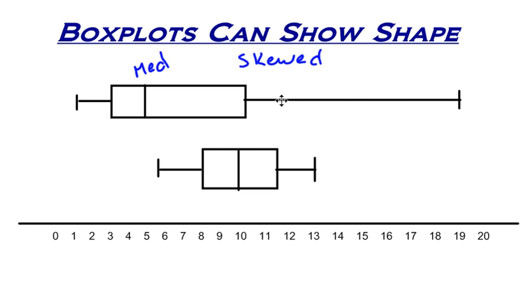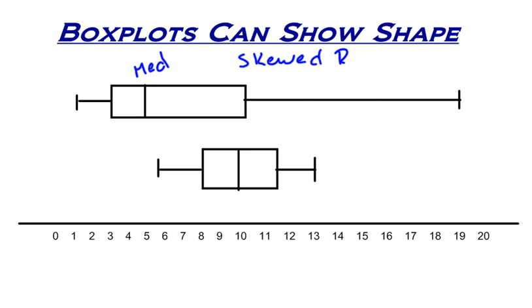In this case, the long whisker is on the right. So in the same way that when I look at a histogram and the tail is on the right, if the whisker is on the right, this would be skewed right — or skewed to the right.